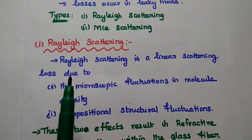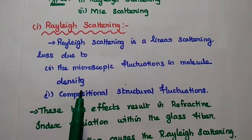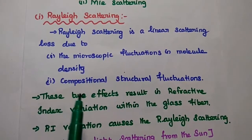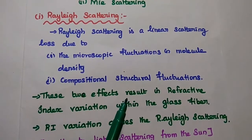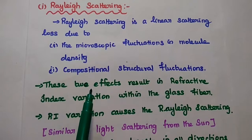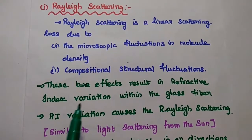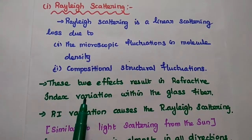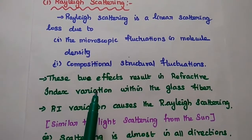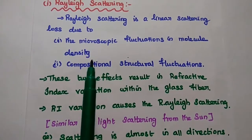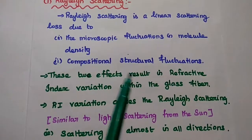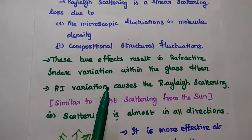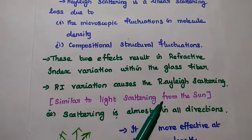The first type is Rayleigh scattering. This type of scattering occurs due to microscopic fluctuations in the molecule density and compositional structural fluctuations. These two effects result in refractive index variation within the glass fiber. The refractive index depends on the fiber material — if there are any fluctuations in the molecule density or structural fluctuations, it will affect the refractive index, and this refractive index variation causes Rayleigh scattering.